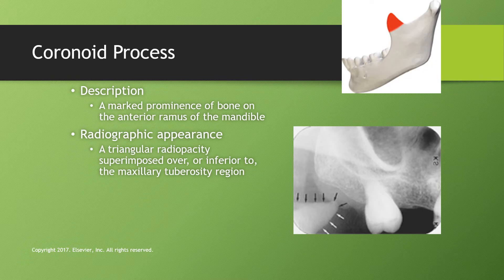The coronoid process is a marked prominence of bone on the anterior ramus of the mandible. It has a radiopaque triangular shape superimposed over or inferior to the maxillary tuberosity region. To capture this image the patient would have their mouth open very wide. It is the front part of the ramus.